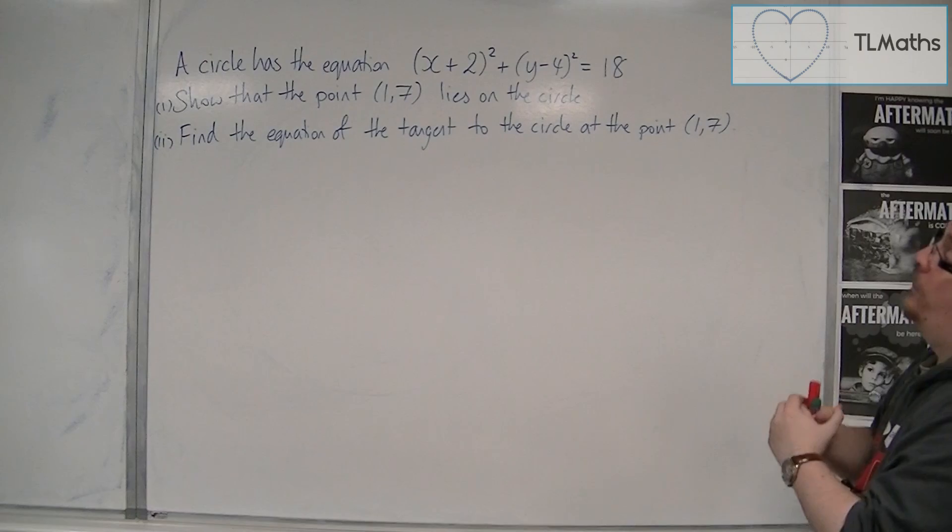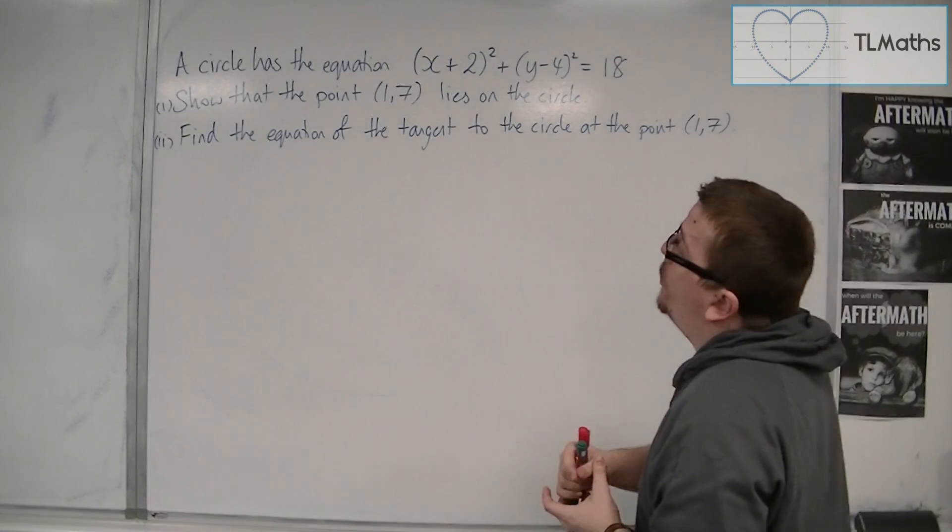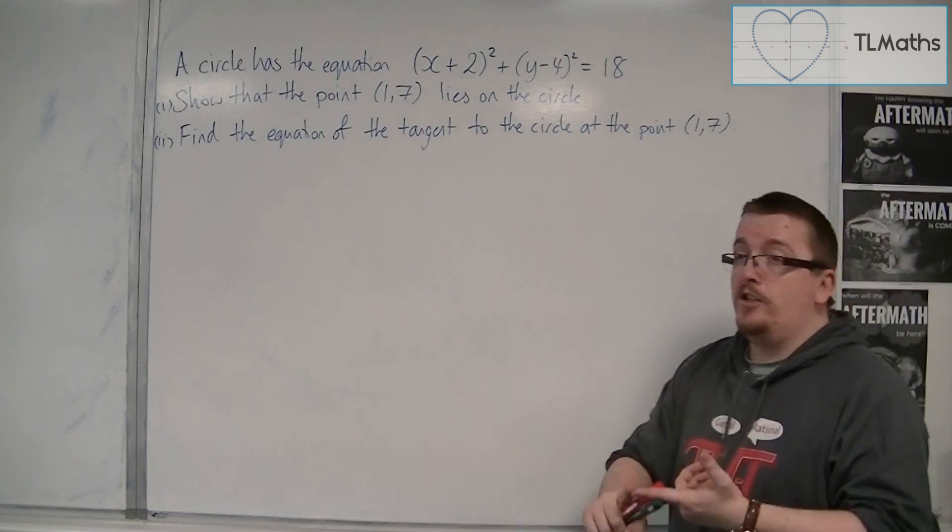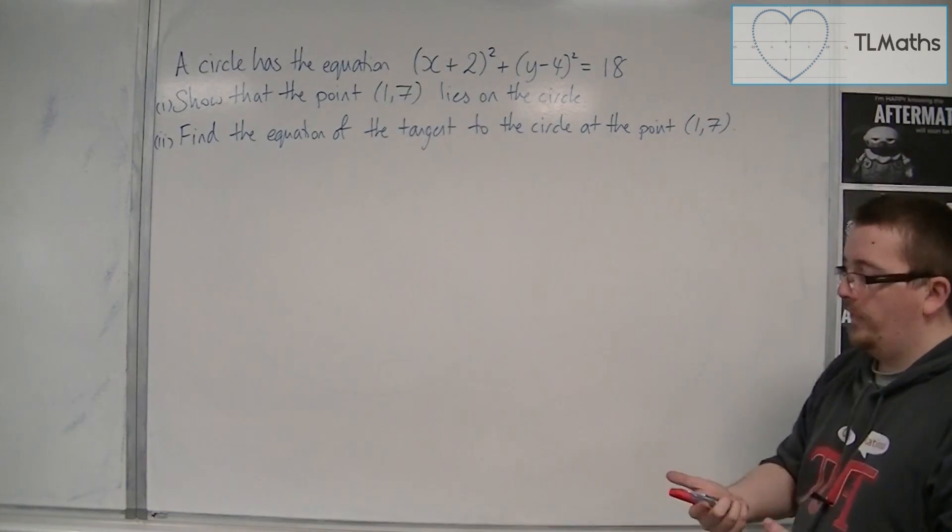So here is the exam style problem. A circle has the equation (x + 2)² + (y - 4)² = 18. We first need to show that the point (1, 7) lies on the circle.